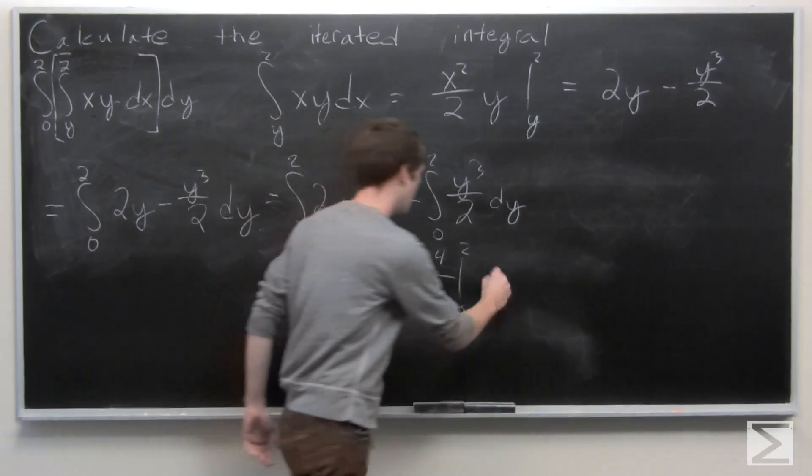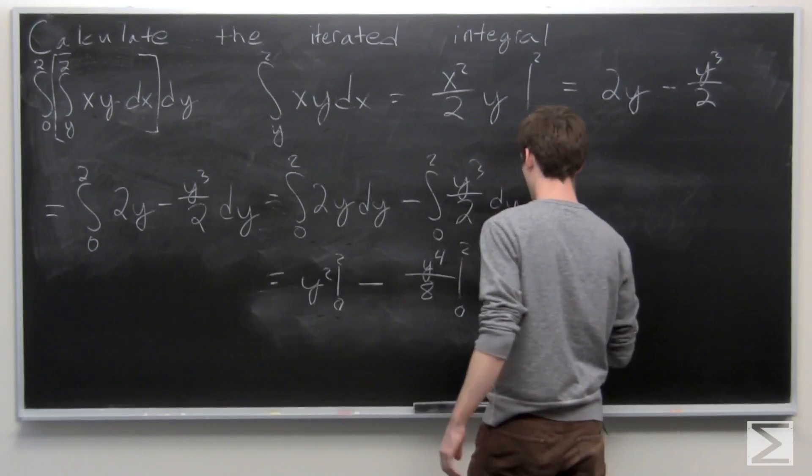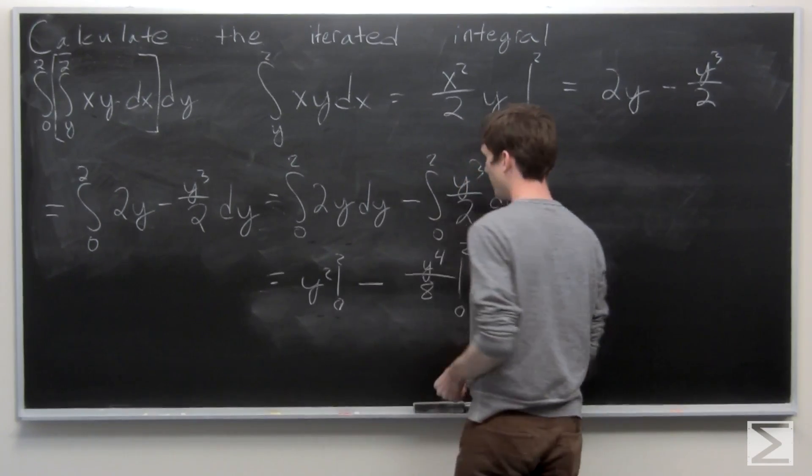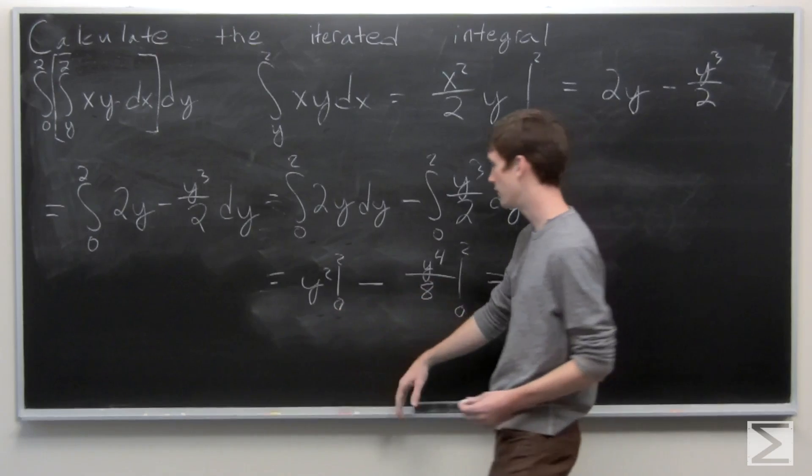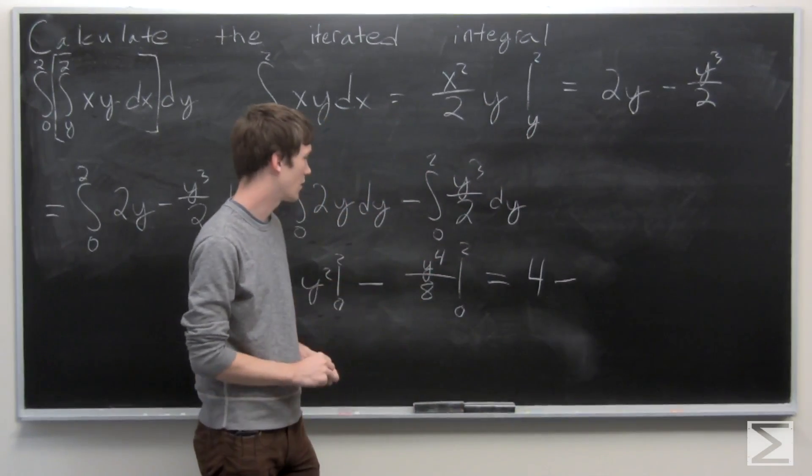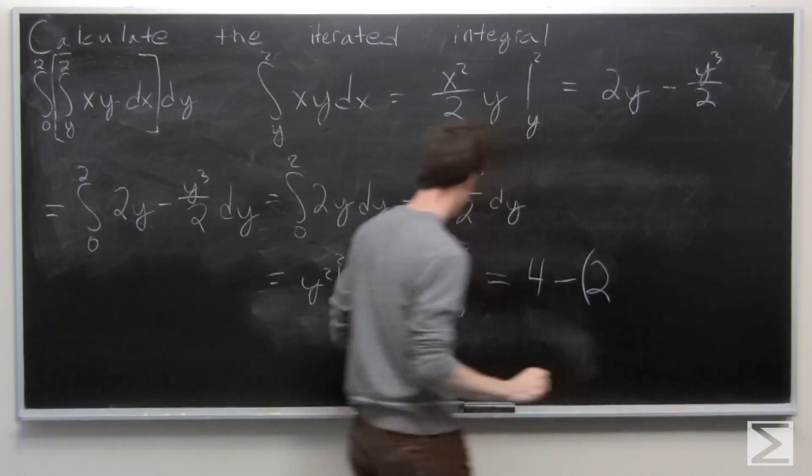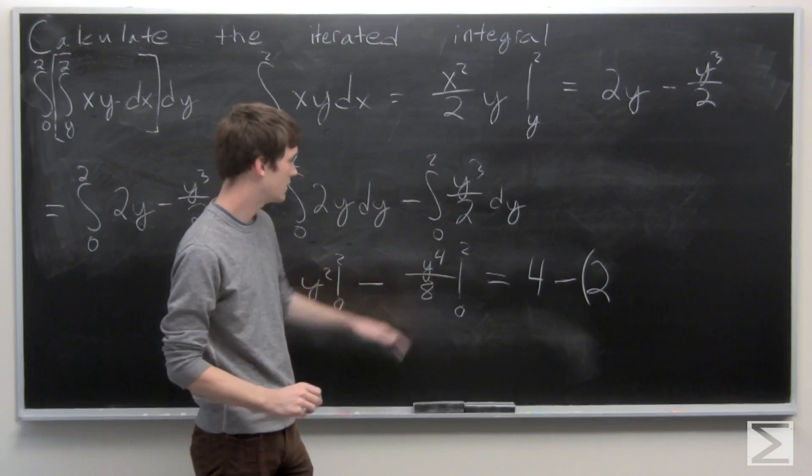So we can evaluate the first. So we get 4 minus 0 is just 4 minus 2 minus 0.